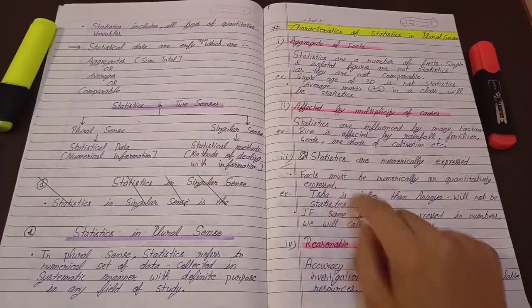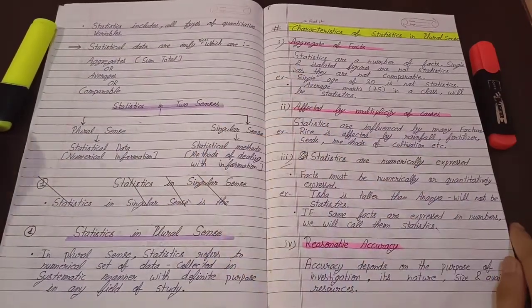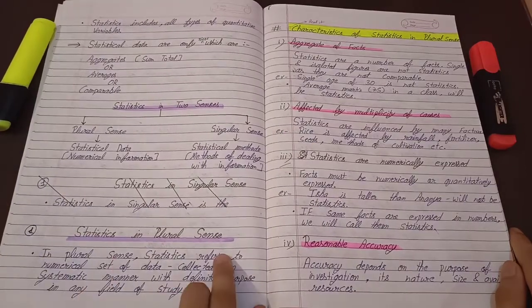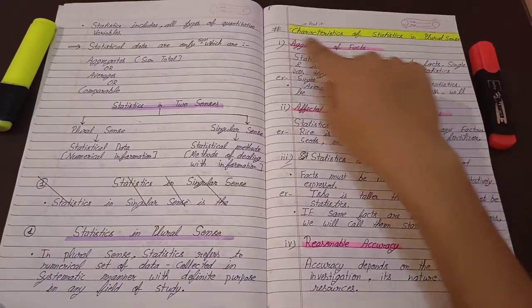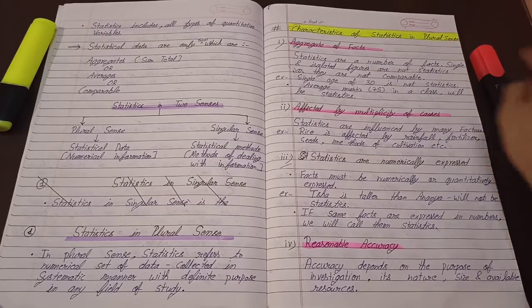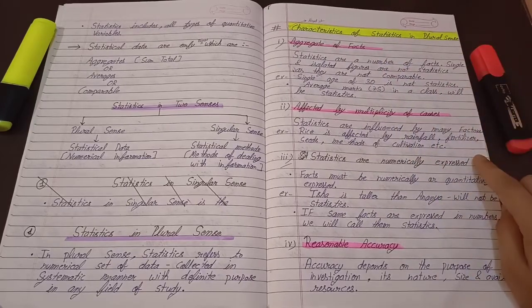Aggregates, averages are comparable. Statistics in two senses: plural sense, singular sense. Characteristics of statistics: presence, aggregate effects, affected.